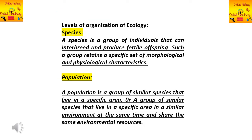Now we discuss the levels of organization of ecology. The first level is species. A species is a group of individuals that interbreed and produce fertile offspring. They share a specific set of morphological and physiological characters. Such a group with similar morphology and physiology is called a species.